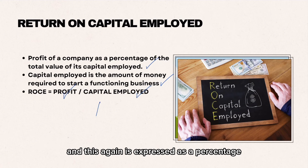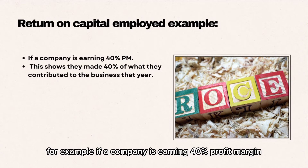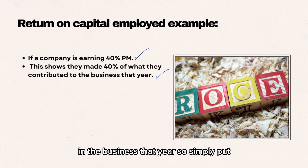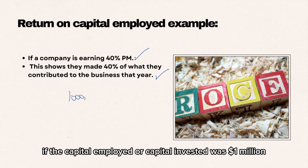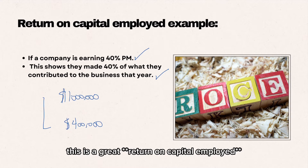For example, if a company is earning a 40% return on capital employed, this means that they have made 40% of what they contributed to the business that year. Simply put, if the capital employed was $1 million, at 40% they will be getting $400,000 back as profit. This is a great profit margin.